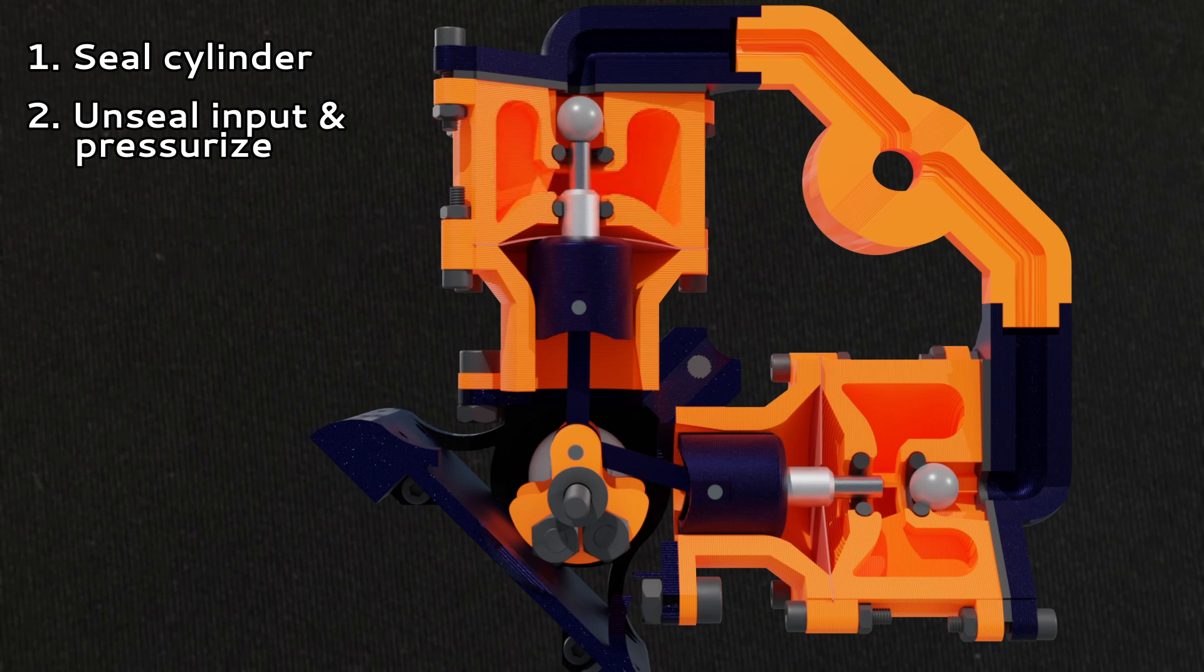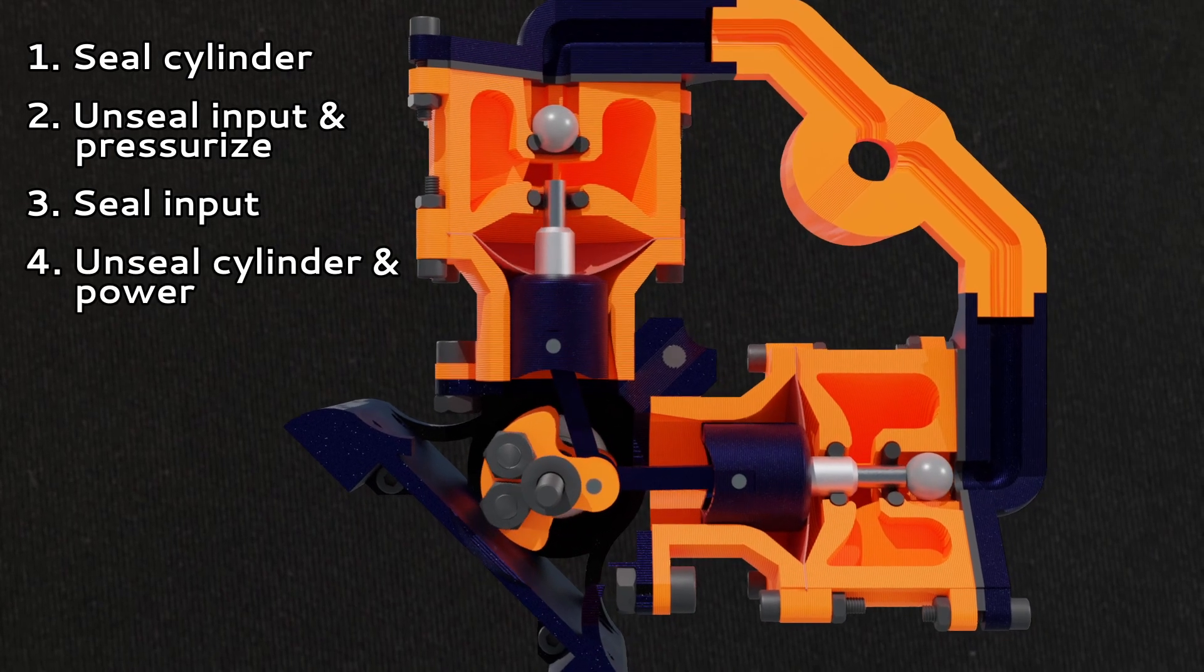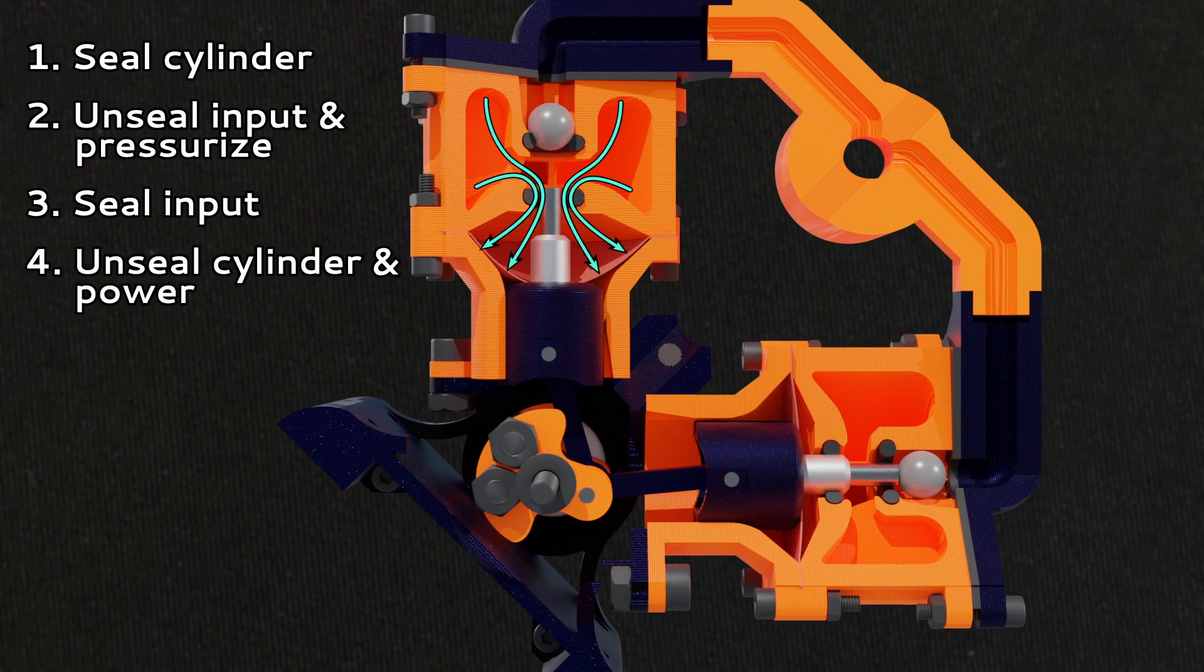As the piston starts moving down again, the ball valve closes again, trapping the pressurized air in the reservoir. Then, as the cylinder seal is broken, the air from the reservoir will inflate the diaphragm, which pushes on the piston, which in turn rotates the crankshaft.